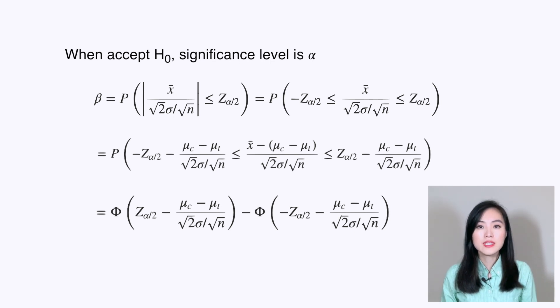Now there are two possibilities: either μ_c is larger than μ_t, or μ_c is less than μ_t. The results are the same for both scenarios, so let's look at one of them.